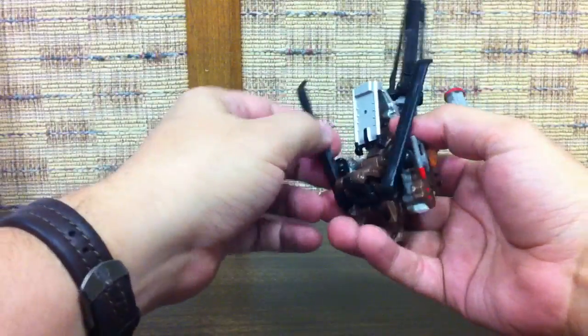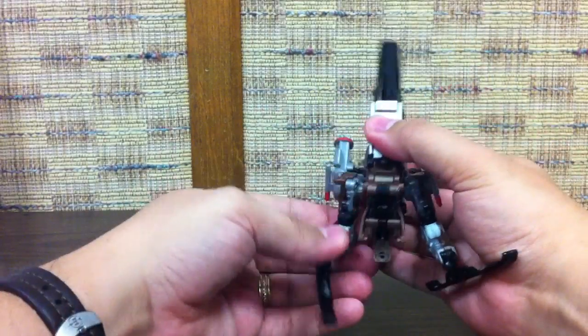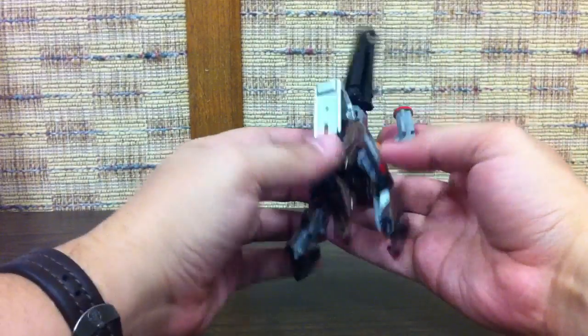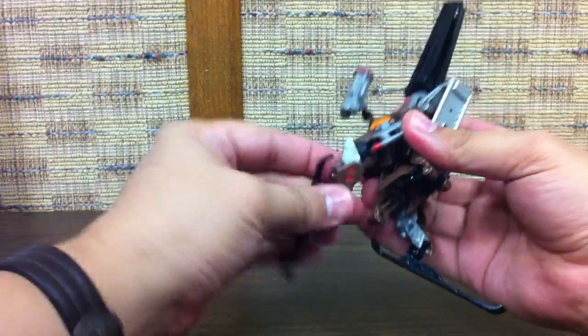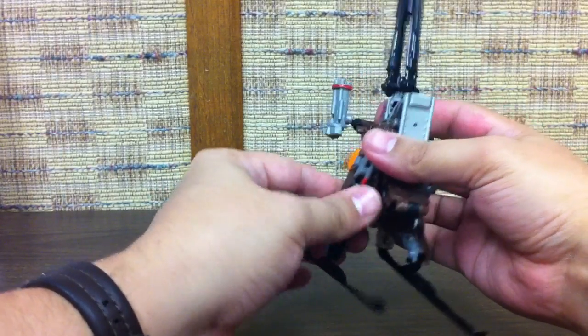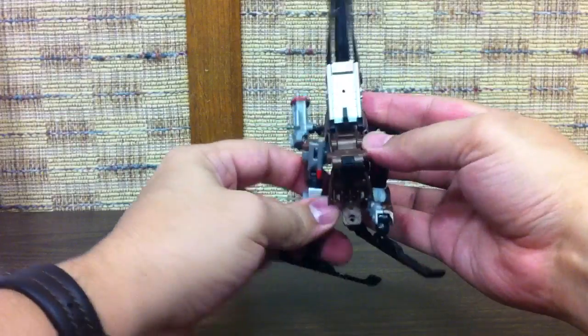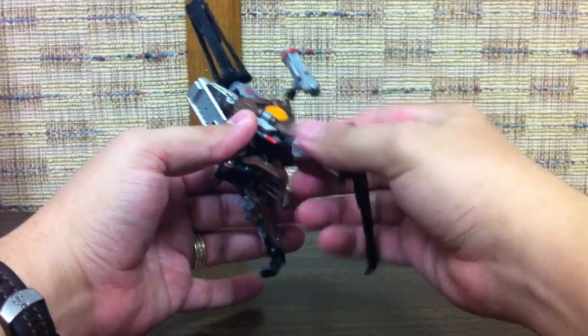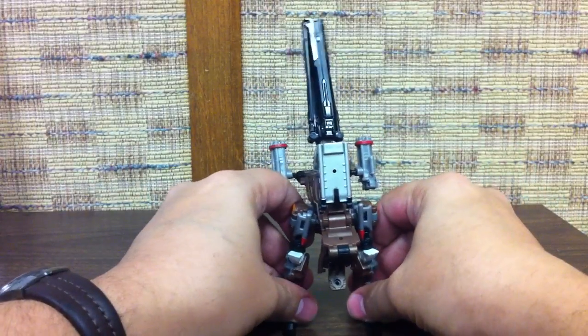And then the robot mode, you just want to... These are going to form the legs. Just fold these down. Got to flip in these little pieces right here. I'm going to rotate these around. And, rotate the skis around. And, that'll give him some knee movement here. Okay, rotate the knee around. Rotate the ski around. He does have ski feet, which is kind of cool.